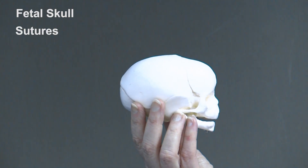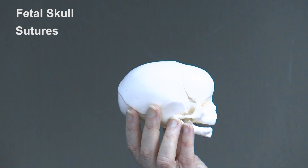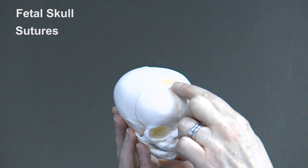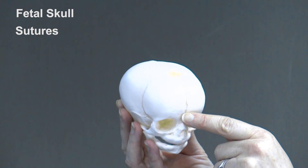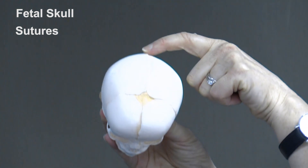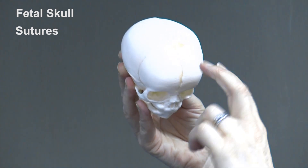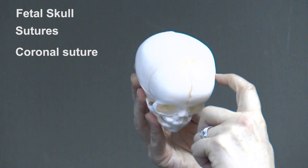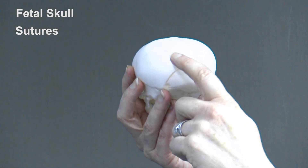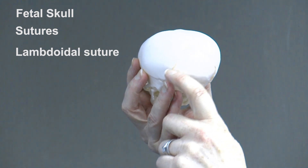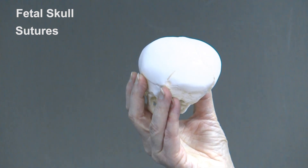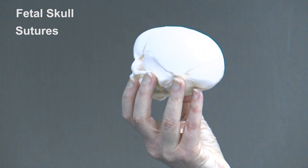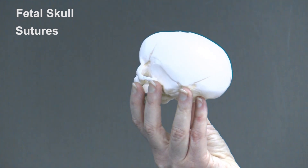The next thing we need to know about are the sutures, which are the cranial joints formed where two bones meet. Where the two frontal bones meet, we have the frontal suture. Where the two parietal bones meet, we have the sagittal suture. Where the frontal and parietal bones meet, we have the coronal suture. At the back, where the parietal bones meet the occipital bone, we have the lambdoidal suture. Sutures are important because they allow overlap of the skull bones during birth — a process known as moulding.